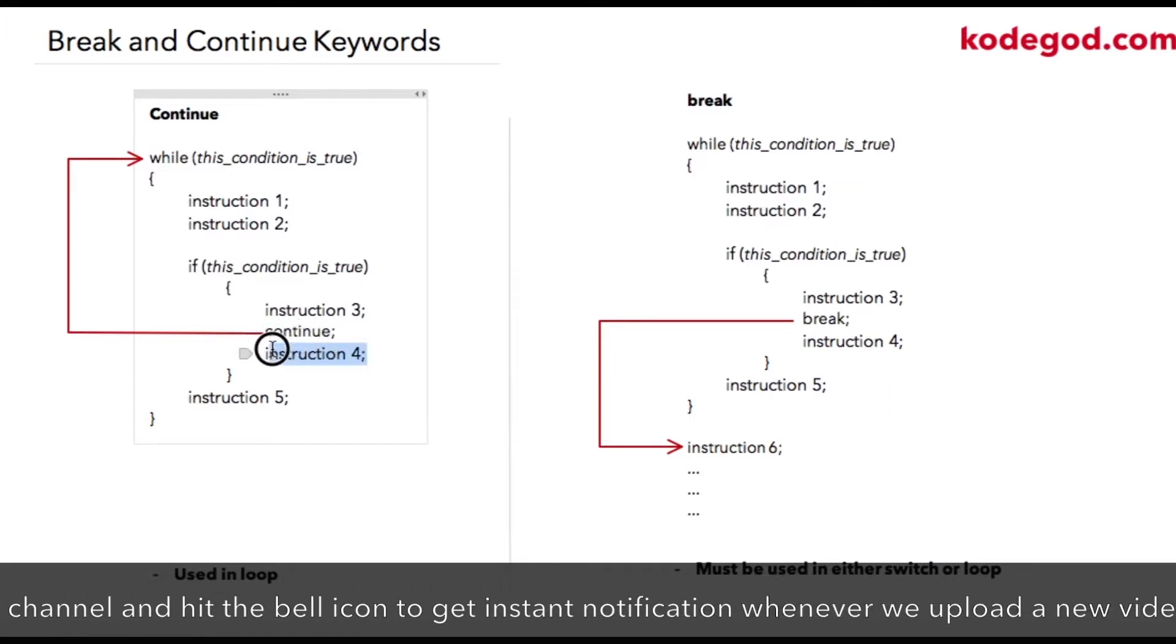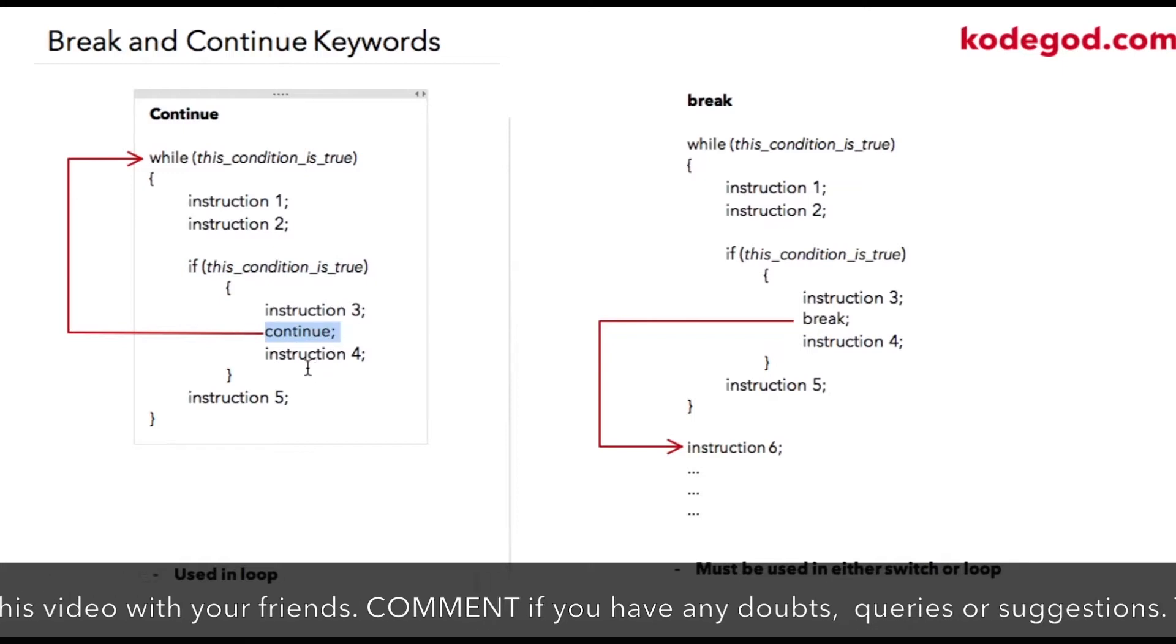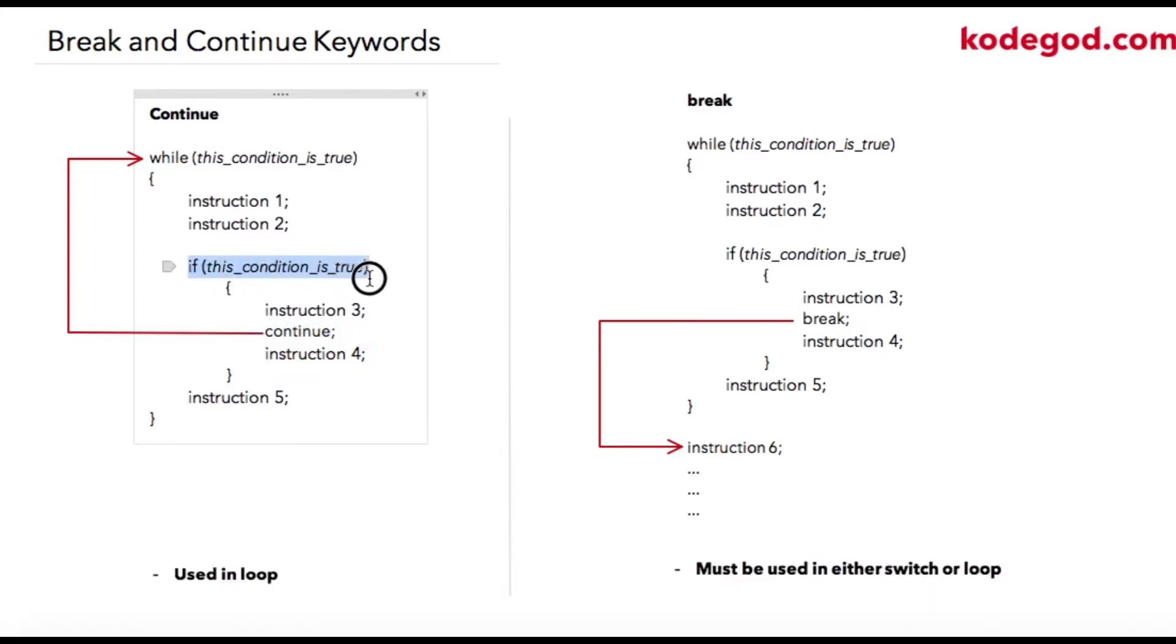Because you cannot have continue directly, otherwise there is no point of using it inside a while loop. So this condition is not compulsory, but ideally there would be examples where you will need to skip few instructions based on some condition. In such cases, you can use the continue keyword along with some condition specified in if.